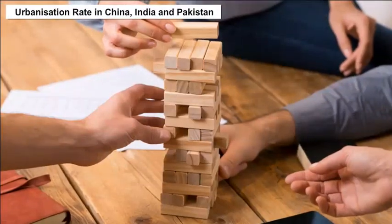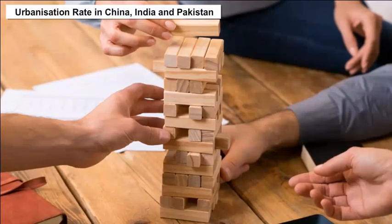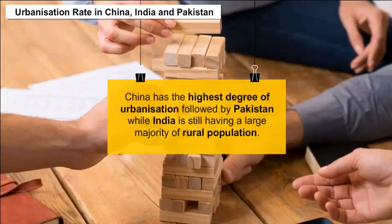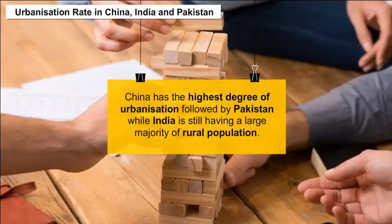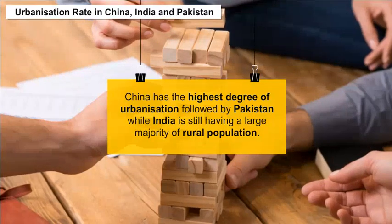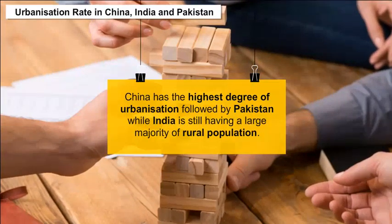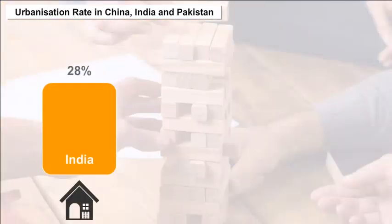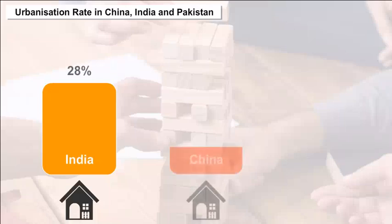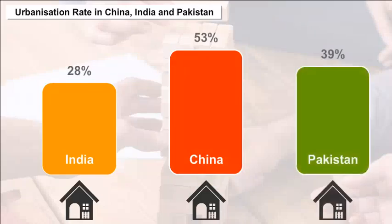Urbanization Rate in China, India, and Pakistan: China has the highest degree of urbanization, followed by Pakistan, while India still has a large majority of rural population. India has 28% of its population living in urban areas, whereas China and Pakistan have 53% and 39% respectively.